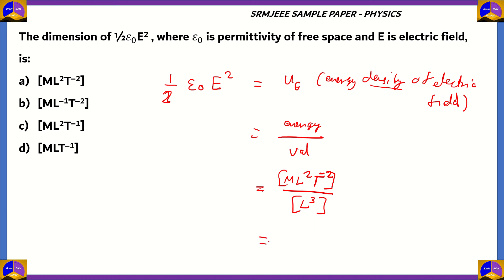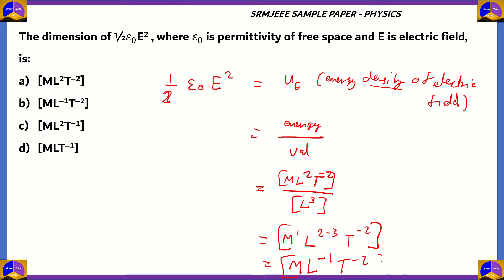When we solve the equation, we have M raised to 1 and L raised to 2 minus 3. Using the law of exponents — a^m divided by a^n equals a^(m−n) — we get T raised to minus 2. Doing 2 minus 3 gives minus 1. So finally, you get ML⁻¹T⁻² as the correct dimensions of half epsilon naught E squared. We're looking for the dimensions of the entire expression, so the correct answer is option B: ML⁻¹T⁻².